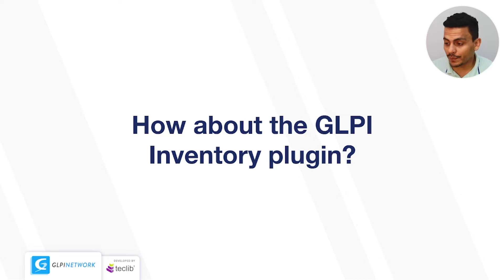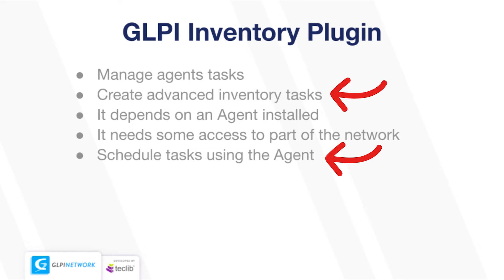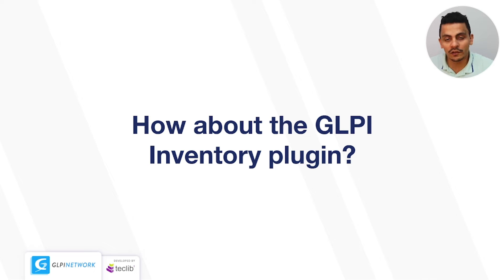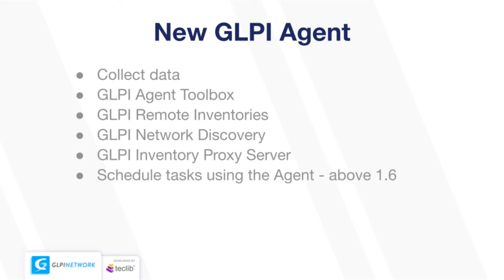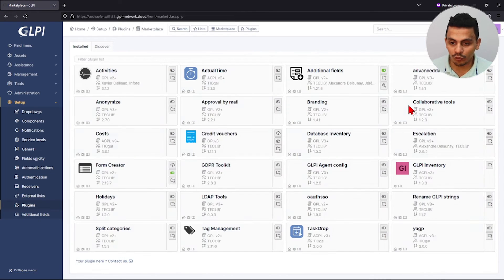Now, how about the GLPI Inventory plugin? The inventory plugin is mainly for collecting data from computers in your network, and also when you need advanced tasks like those available with the GLPI agent. For example, if you want to schedule tasks using the agents — such as SNMP connections, network discovery, or network inventory — you need the GLPI inventory plugin. This is the main idea of the plugin, and it's almost the same as what we had with the Fusion Inventory plugin, now updated as the GLPI Inventory plugin. You can use the GLPI agent to perform almost the same tasks.